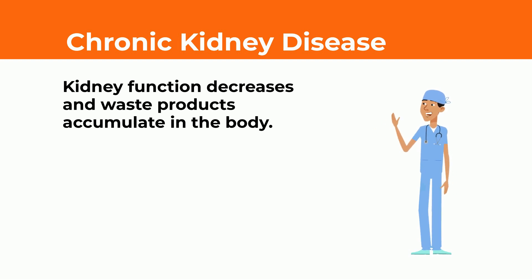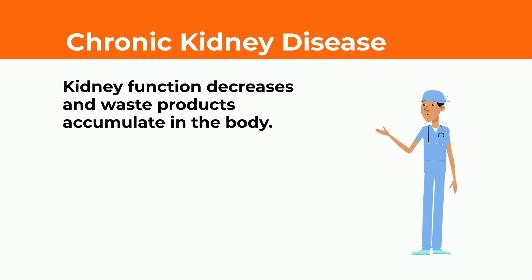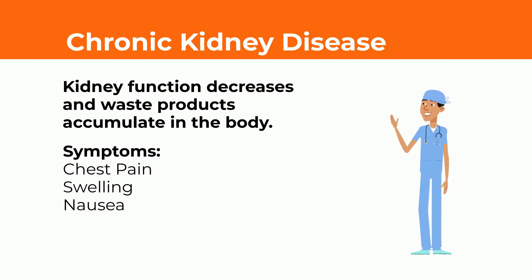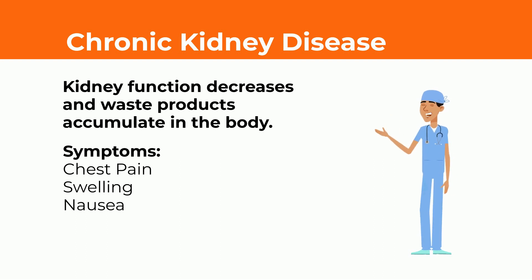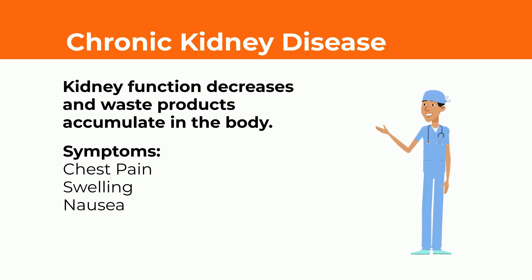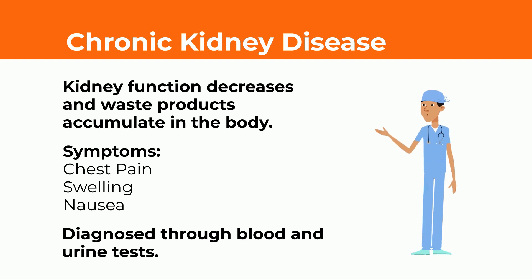This typically persists for more than three months. Some of the symptoms of advanced chronic kidney disease can include chest pain, swelling, nausea, and cramps. In extreme cases, the disease can worsen and possibly lead to kidney failure. Chronic kidney disease is diagnosed through analysis of blood and urine tests.